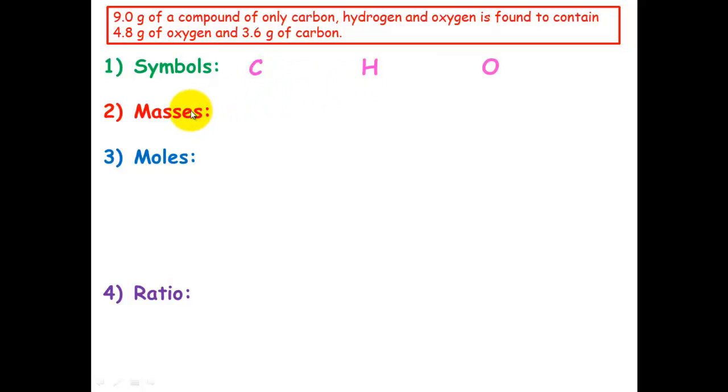Step two is write down the masses of those elements. So we're told that oxygen is 4.8 and carbon is 3.6. So that's fine. We're not told what hydrogen is. However, we do know that the entire compound weighs 9.0 grams. So if we subtract 3.6 and 4.8 from 9.0, we're left with 0.6 grams, which must be the mass of hydrogen.